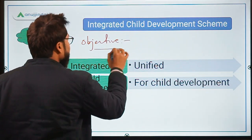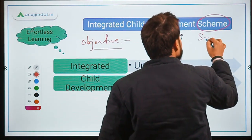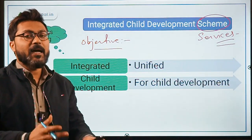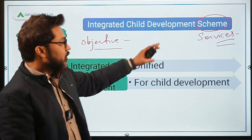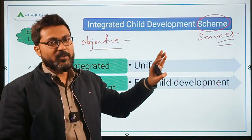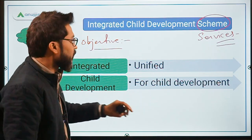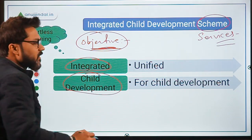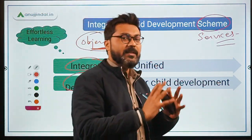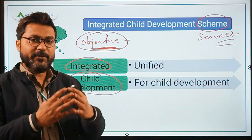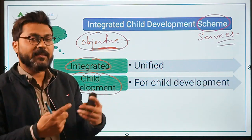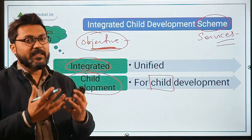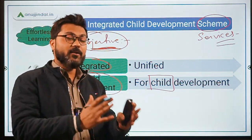One thing to note is that at many places, instead of 'scheme,' the word 'services' is written. Don't get confused because it is an umbrella scheme and various services are provided under it. So if 'services' is written in place of 'scheme,' that is not an issue — both terms are acceptable. Now, let's simplify the objective. The word 'integrated' means 'unified' — unified services are being provided for child development.